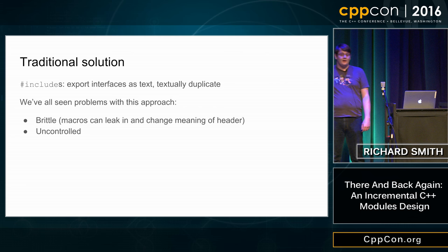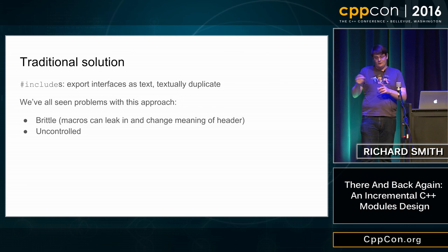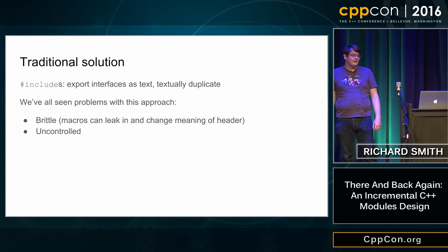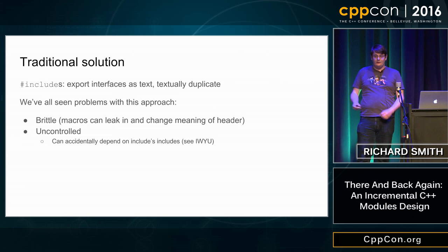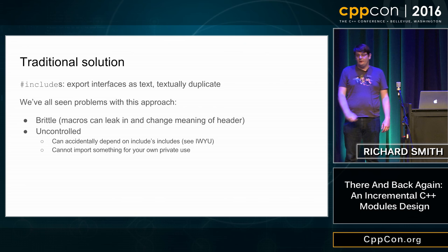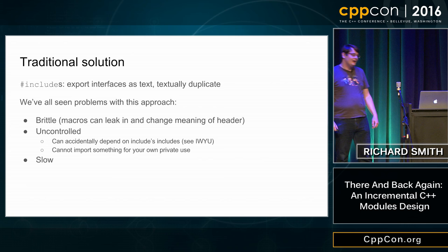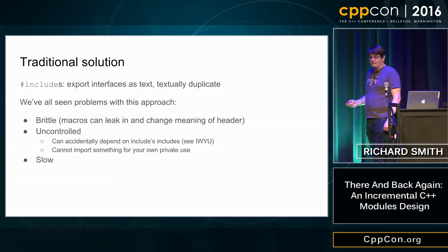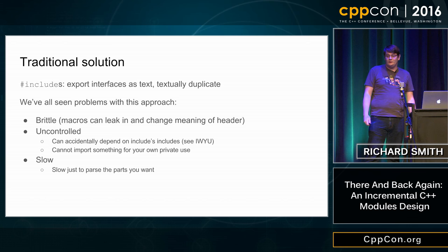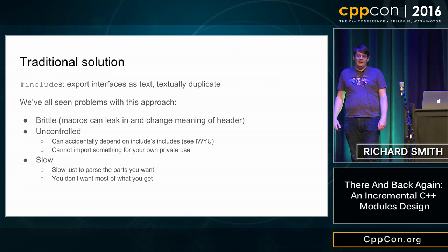Another problem with #includes is they're uncontrolled. If I'm exposing my library's interface and need something else to implement parts in my header, I can't stop that other header I include from being leaked to people who include me. You can't import something for your own private use in a header, which means people will develop dependencies on things you didn't intend to provide, and if you remove them you break those users.